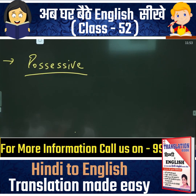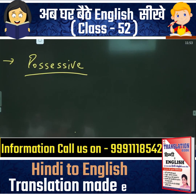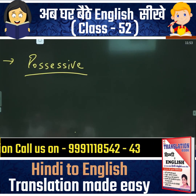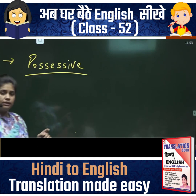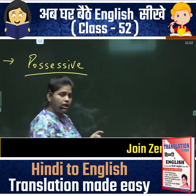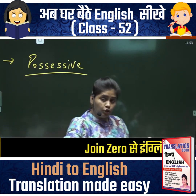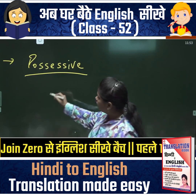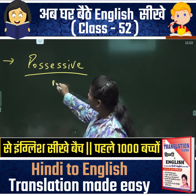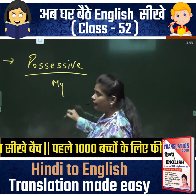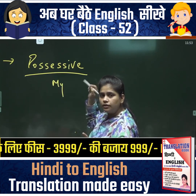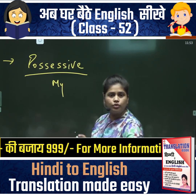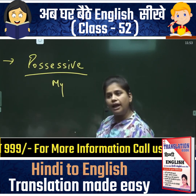Adhikar is nirjeev and relation is sajeev. Pen is my adhikar and you are my partner. But for both of them, English will use 'my' — my pen, my class, my mic, my students.